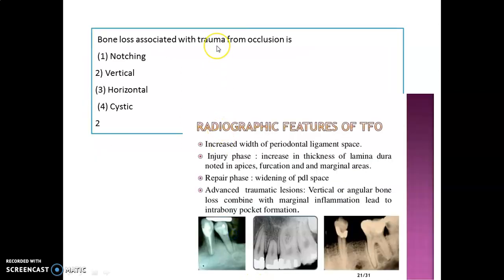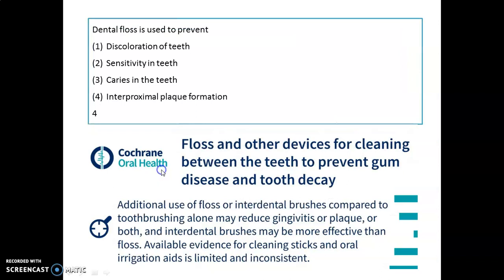Bone loss associated with TFO — trauma from occlusion — is vertical or angular bone loss, most often seen in advanced traumatic lesions. Initially there is an increase in width of the PDL, later in the injury phase there is an increase in thickness of lamina dura, mostly in the furcation and marginal areas, followed by widening of the PDL.